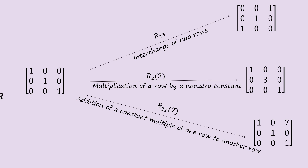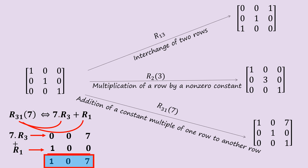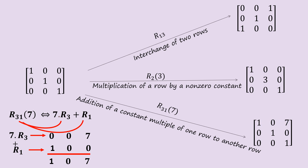R317 means we multiply R3 by 7 and add it to R1, then replace our answer in R1. So 7×R3 gives 0-0-7, and adding to R1 (which is 1-0-0) gives 1-0-7. You can see how it is replaced in R1 of the matrix.